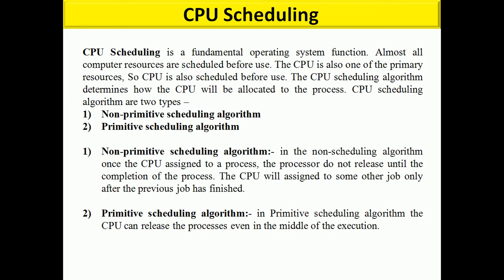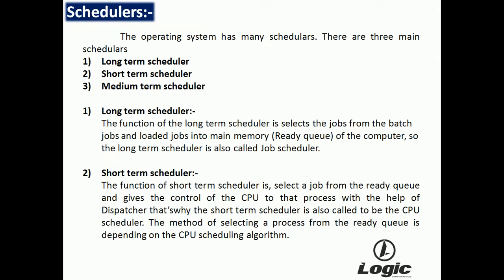So these are the two types of scheduling algorithms. Next is the scheduler. In the operating system, there are different types of schedulers, but three main types: long-term schedulers, short-term schedulers, and medium-term schedulers. The function of the long-term scheduler is to select jobs from the batch job queue and load them into the main memory. The long-term scheduler is also called the job scheduler.